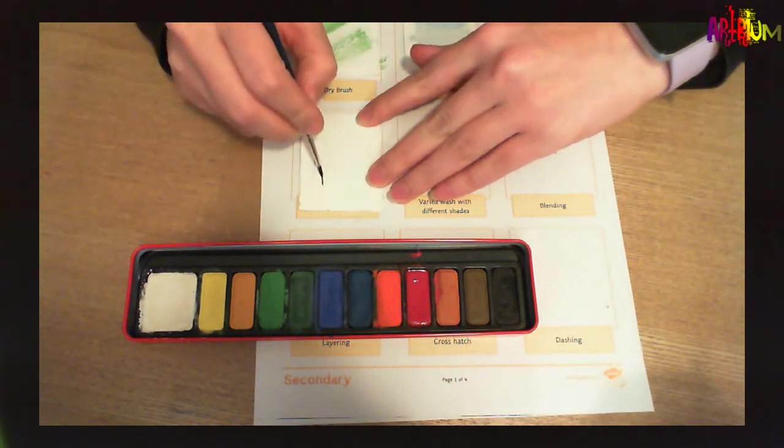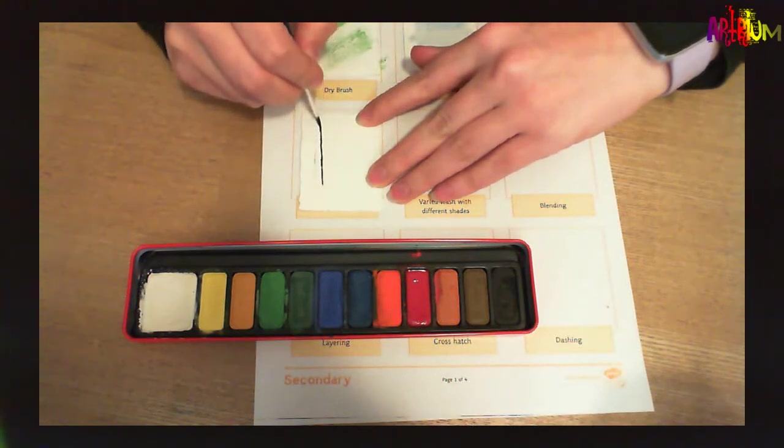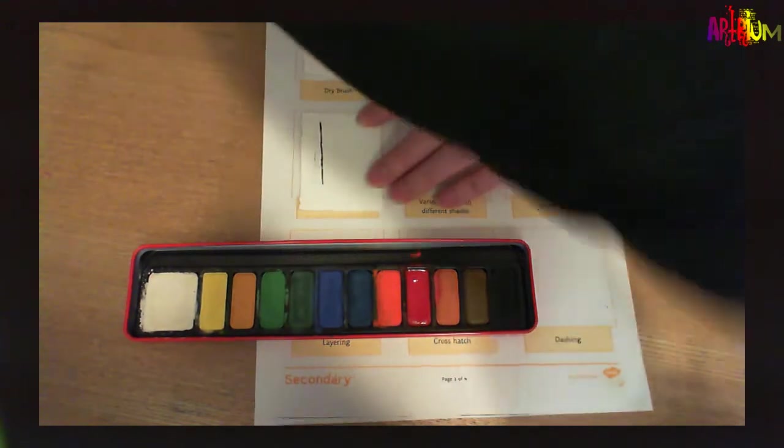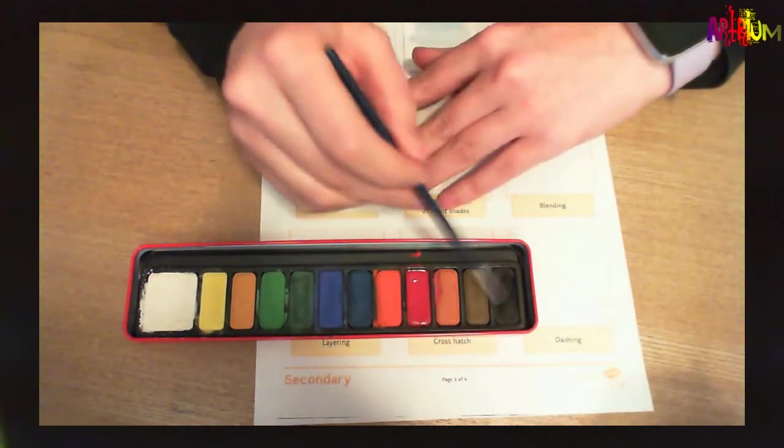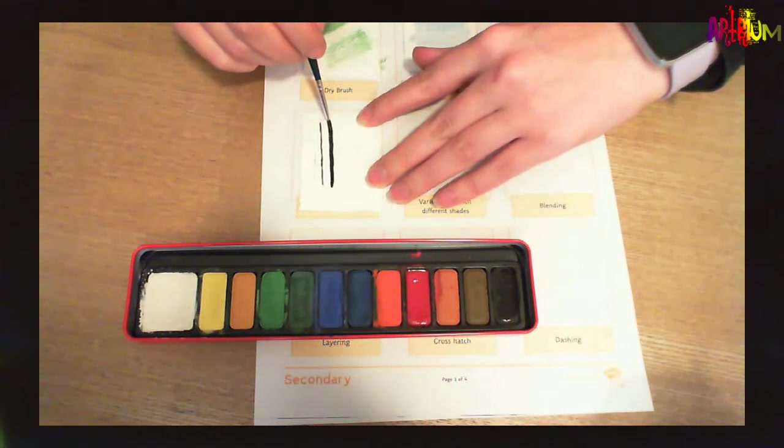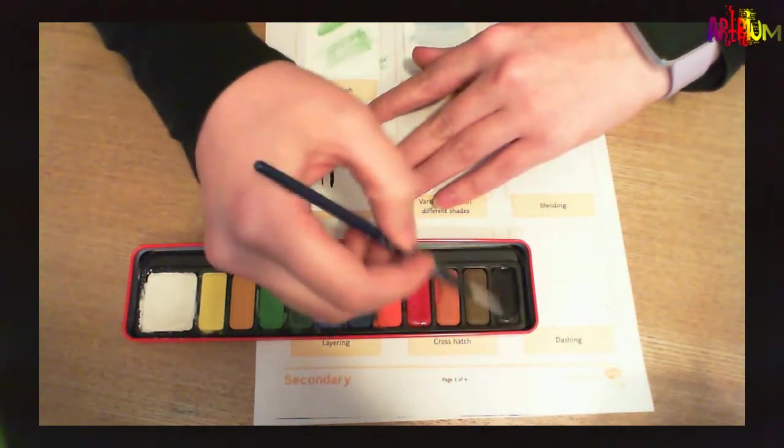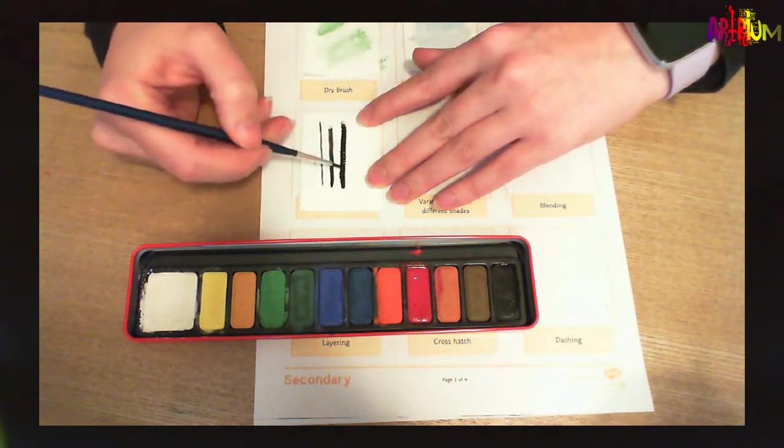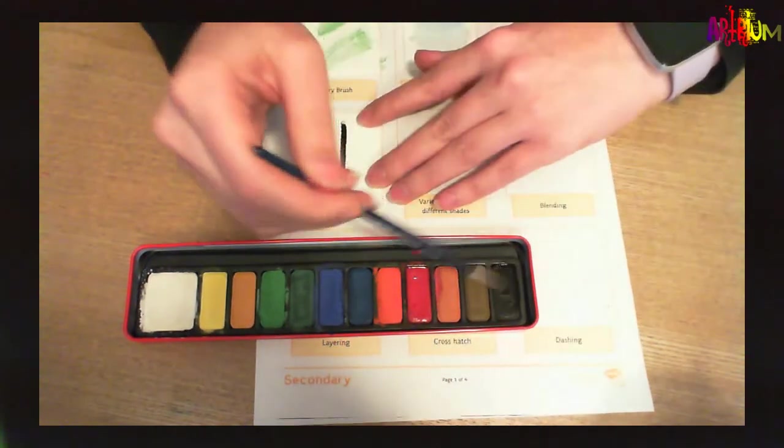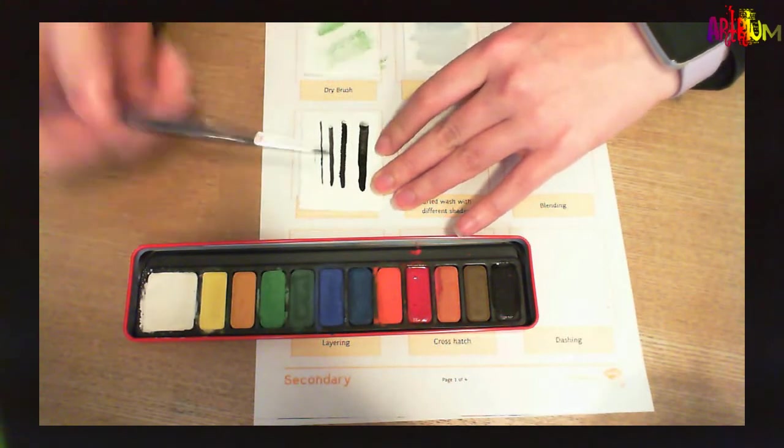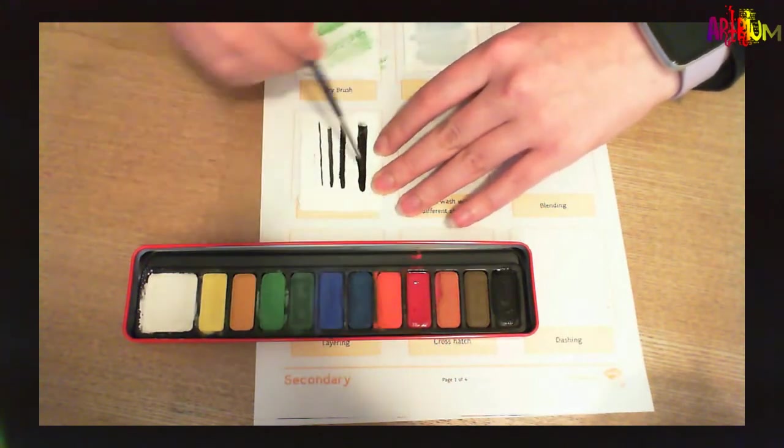And then you could maybe start to thicken it up. And you can make them even bolder. You can add even more thicker consistency of paint to make it even more opaque. And this is kind of getting the dry brush technique going again. I'm going to fill that in. And I'm going to do a final very thick one towards the end. And that is applying a lot more pressure with a thicker consistency of paint.